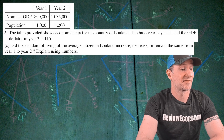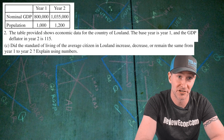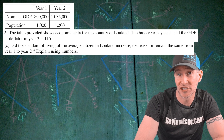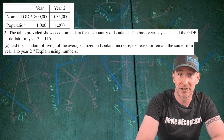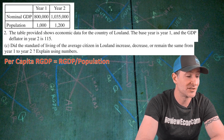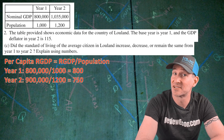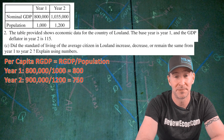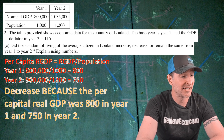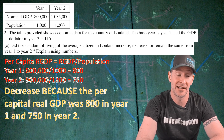For part C, we are asked if the standard of living for the average citizen in Luland increased, decreased, or remained the same from year one to year two, and we have to explain using numbers. The best way to determine standard of living is real GDP per capita — take the real GDP and divide it by the population. For year one, that gives us 800 per capita real GDP; for year two, 750 per capita real GDP. Since per capita real GDP decreased from year one to year two, the answer is: it decreased, because per capita real GDP was 800 in year one and 750 in year two.